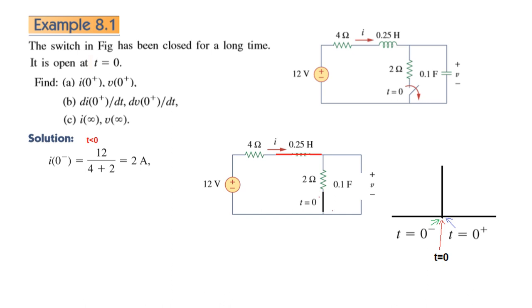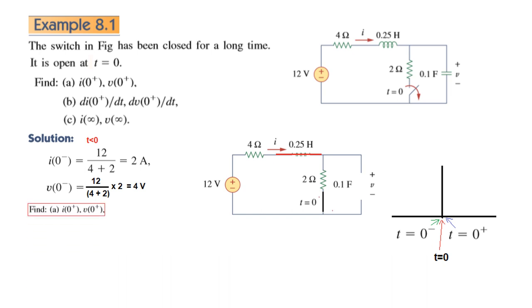Whatever current or voltage we find will be for t less than zero, i.e., at t zero minus. The current i(0-) is 12 divided by (4 plus 2), which is 2 amperes. The voltage v(0-) is the current 2 amperes multiplied by 2 ohms, which is 4 volts — or equivalently by voltage division: 12 divided by (4 plus 2) multiplied by 2, giving 4 volts. Now we apply the continuity rules to find i(0+) and v(0+).